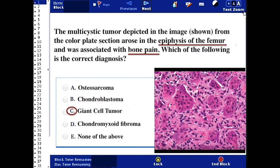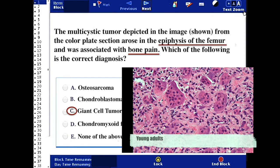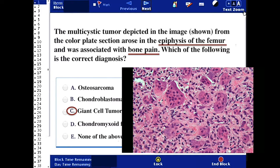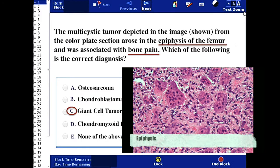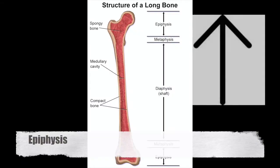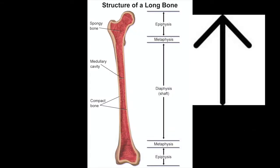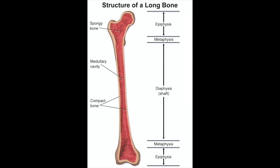Giant cell tumor is a tumor comprised of multi-nucleated giant cells and stromal cells. It occurs in young adults. One of the very high yield points is that it arises in the epiphysis. This is the diaphysis, here's the metaphysis, and up here is the epiphysis. This is very important because it's the only tumor you need to know that's going to arise in the epiphysis.